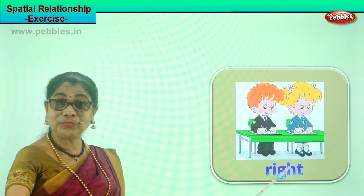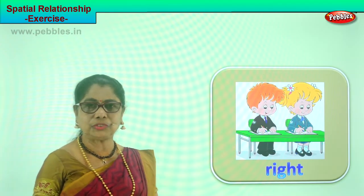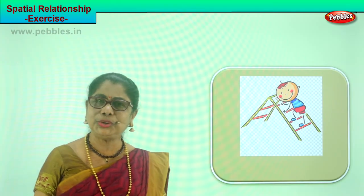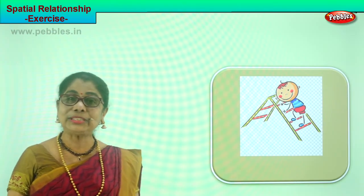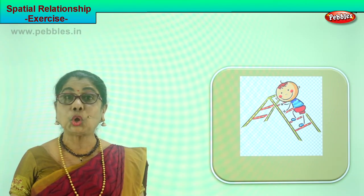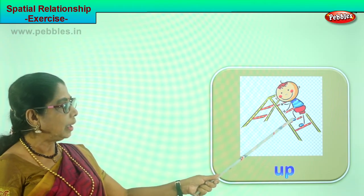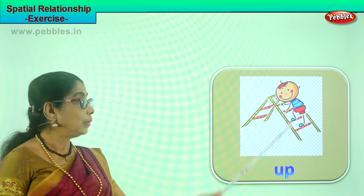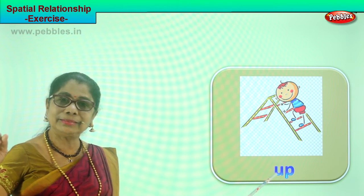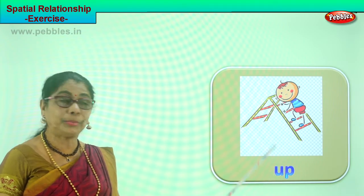Shall we take another picture? What is the little child doing? He is climbing, going up the ladder — up, up, up! What is the little boy doing? He's going up the ladder, or going up the sliding board. He's up there, reaching the top.